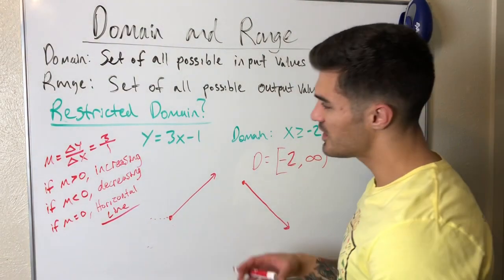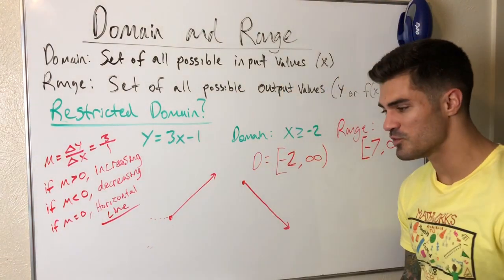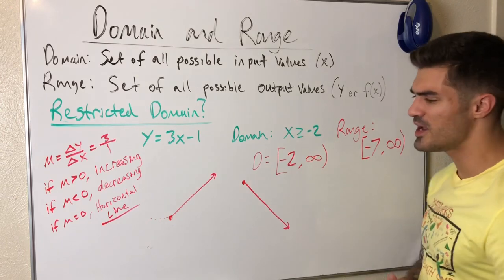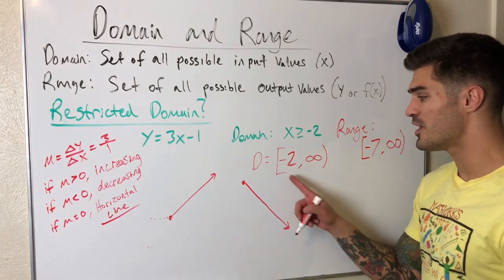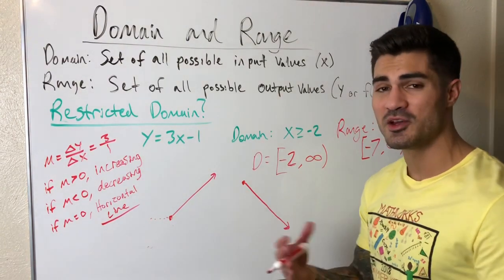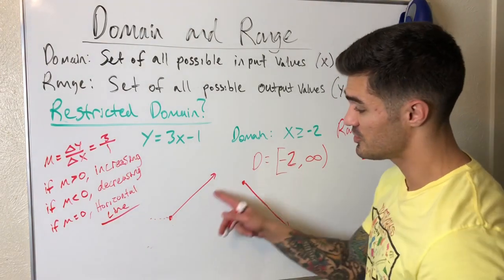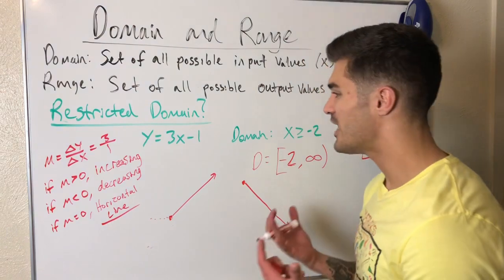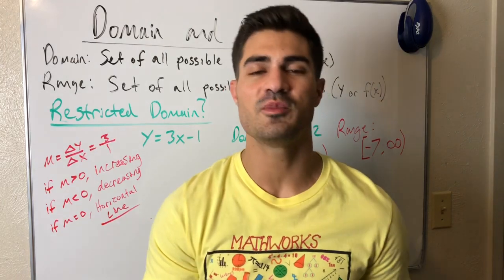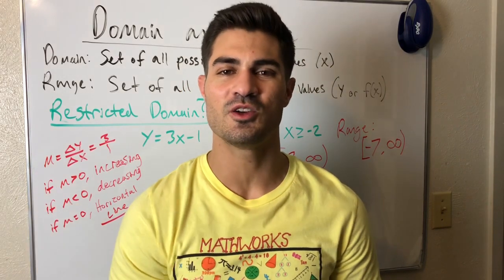The range goes from negative 7 all the way up to infinity. You could have graphed this, and maybe graphing makes more sense when you're first learning, but this shortcut works for more complicated examples — just think about whether it's increasing or decreasing, and what's happening to your domain. You may have a domain bounded above, or bounded both above and below, and you just make those adjustments accordingly. Hopefully this helps you find the range of linear functions with a restricted domain. If you want to see more examples, let me know in the comments. If you enjoyed this video, hit like and subscribe, and I'll see you in the next video — we'll make some more brain gains!